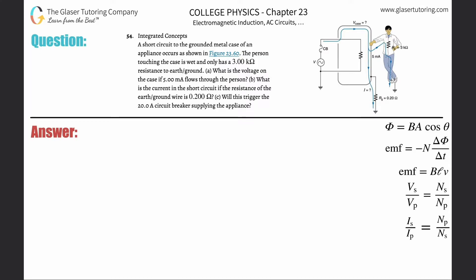Number 54, integrated concepts. A short circuit to the grounded metal case of an appliance occurs as shown in figure 23.6. The person touching the case is wet and only has a 3 kilohm resistance to earth ground. Letter a: what is the voltage on the case if 5 milliamps flows through the person? So what we know here...